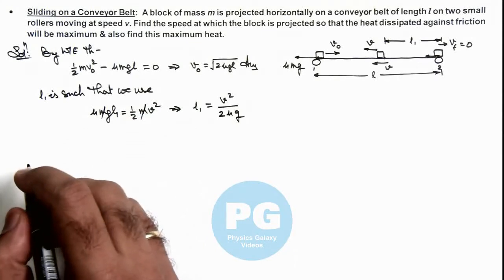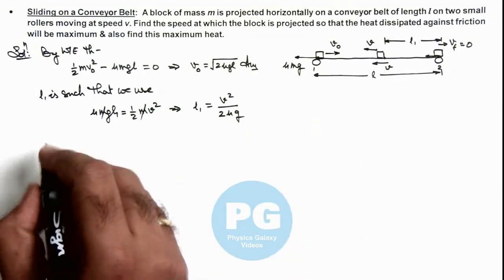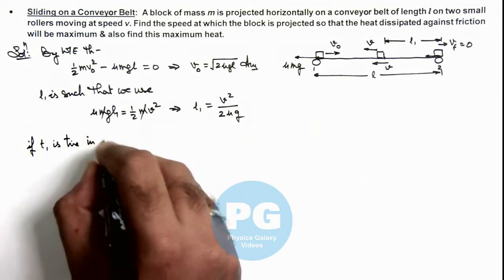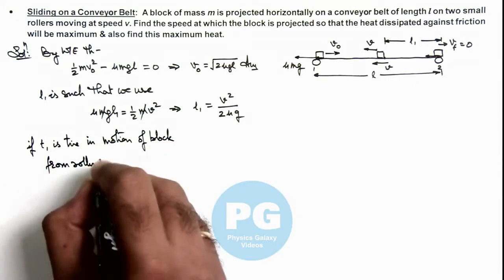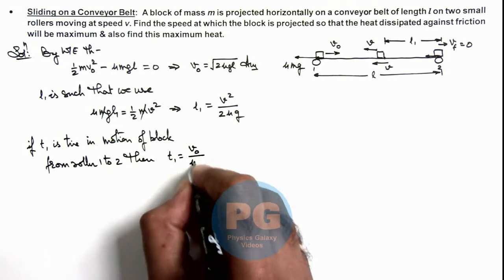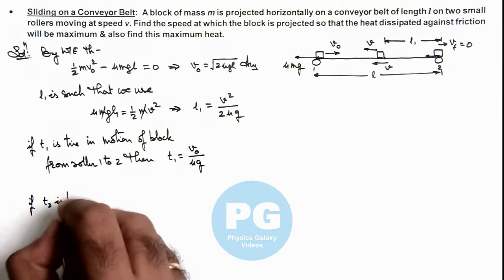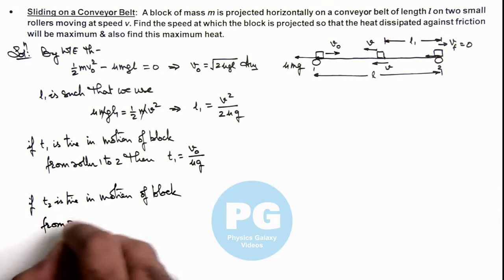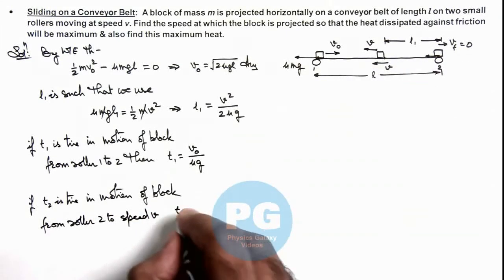From this we can also calculate the times taken by the block. If t₁ is the time in motion of the block from roller 1 to roller 2, then t₁ = v₀/(μg), since the retardation was μg and finally it comes to rest. Similarly, if t₂ is the time in motion of the block from roller 2 to the point where it reaches speed v at distance l₁, then t₂ = v/(μg), as from zero speed to v it is accelerating due to the same friction μg.